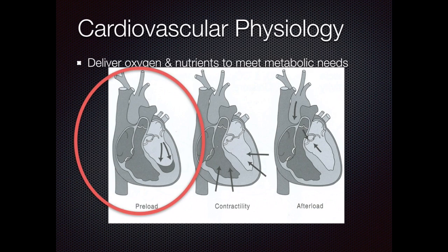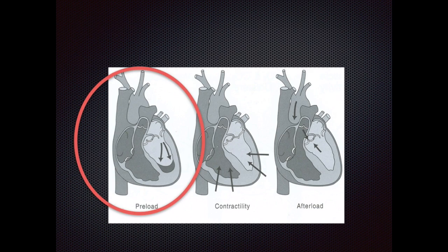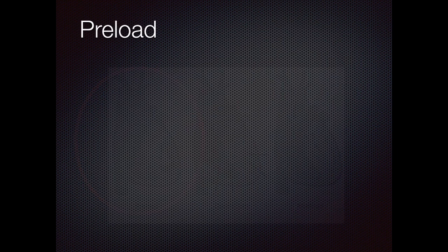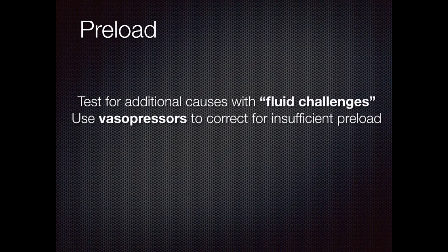Preload will be the first component addressed. When it is lacking, it is important to look for other potential causes of reduced preload, like hypovolemia or reduced intravascular volume, and subsequently treat them. Test for these causes and treat them by giving fluid challenges intravenously to optimize ventricular filling. If the fluid challenge does not augment preload, then use vasopressors.